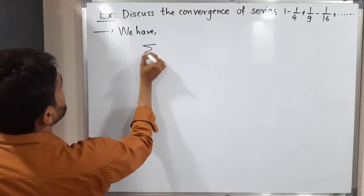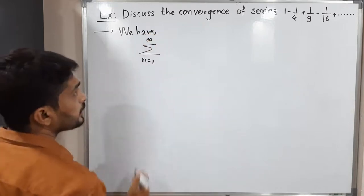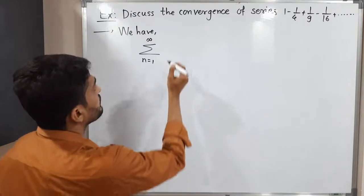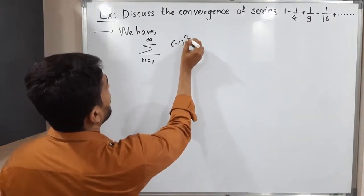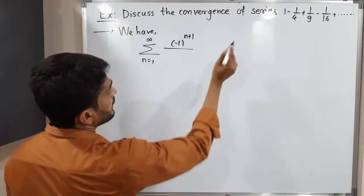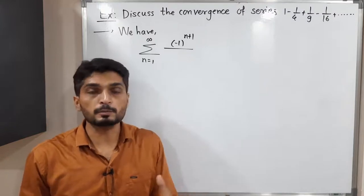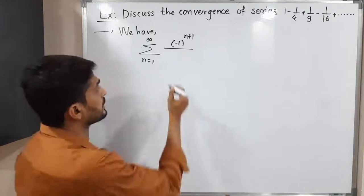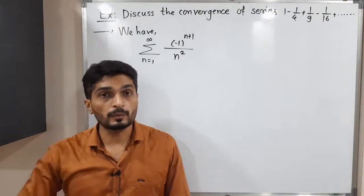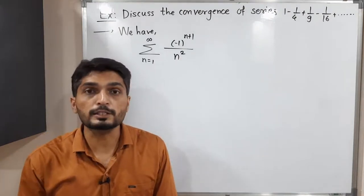I will write in a form of summation, summation n running from one to infinity. You can easily see we have alternating minus plus signs, so let me write here minus one raise to two n plus one. And in the denominator, we have 4, 9, 16 — that means we are having perfect squares — so I write here n square. So this is the given series. We have an alternating series, and we have to check whether it is convergent or not.